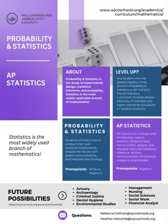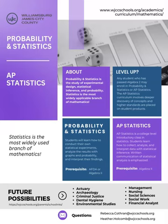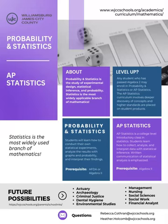Probability and Statistics is the study of experimental design, statistical inference, and probability. Statistics is the most widely applied branch of mathematics. Any student who has passed Algebra 2 may enroll in Probability and Statistics or AP Statistics. In our Probability and Statistics course, students will learn how to conduct their own statistical experiments, analyze the results with graphs and probability, and interpret their findings. The course focuses on the applications of probability, statistics, and logic in business, industry, science, and government, and provides practical preparation for a wide variety of career fields. The prerequisite is AFTA or Algebra 2.